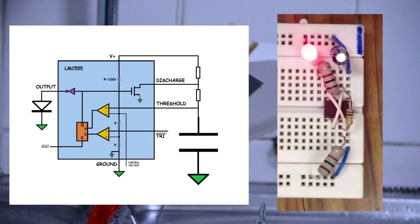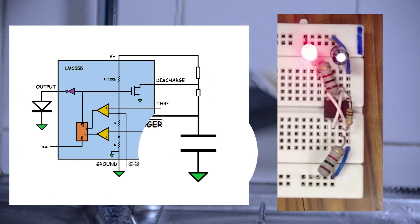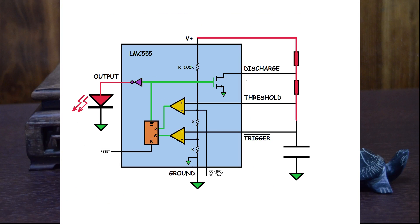A 555 timer achieves oscillation by charging and discharging a capacitor. When the capacitor voltage falls outside the allowable range, which is marked by the upper and lower thresholds, the internal circuit will toggle the charging to pull back the voltage within the range.